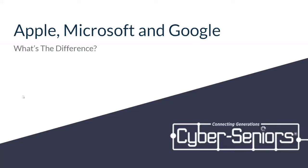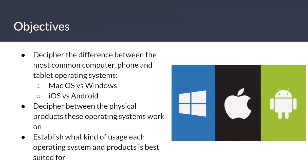Today I'm presenting the big trio of the tech industry: Apple, Microsoft, and Google. We're going to see what's the difference between the three products they offer. We're trying to figure out the difference between the most common computer, phone, and tablet operating systems.